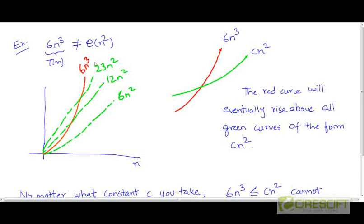1 million n², 1 billion n², eventually we are going to find that the curve for 6n³ is going to rise above any green curve that we choose to focus on.